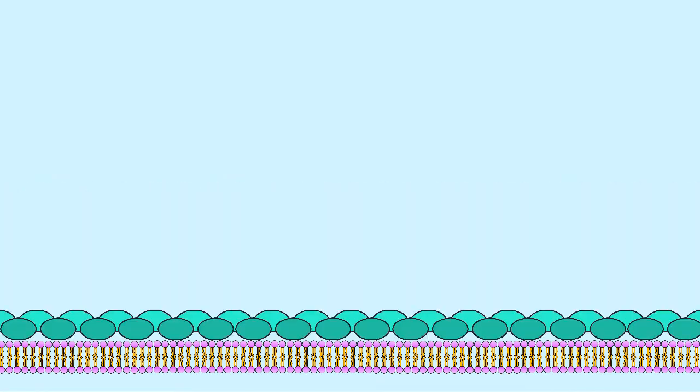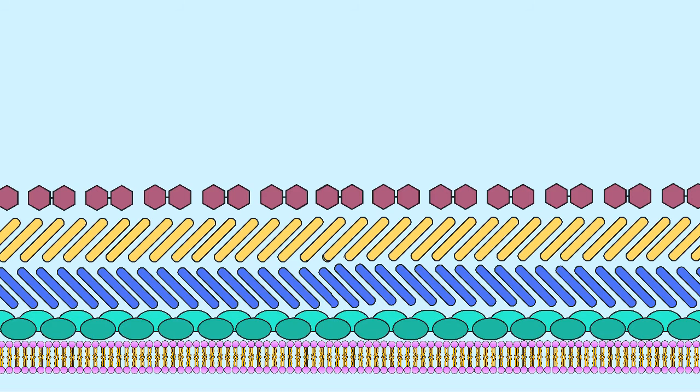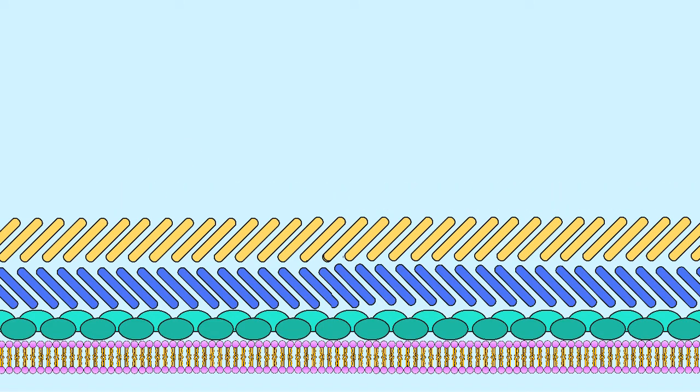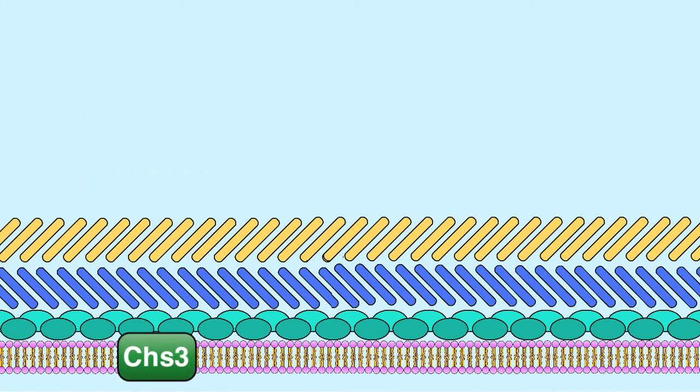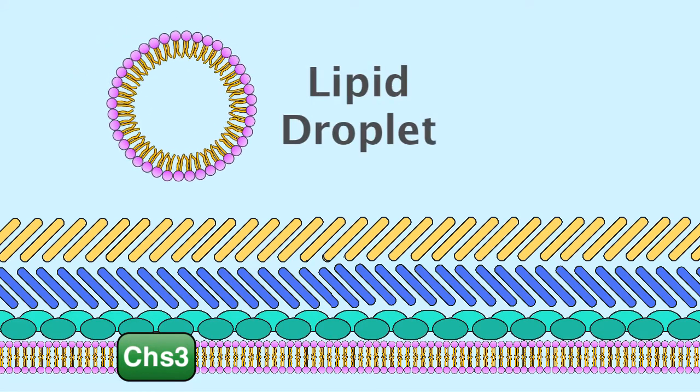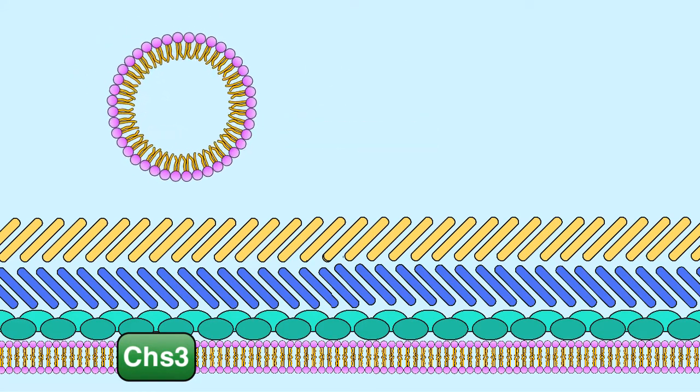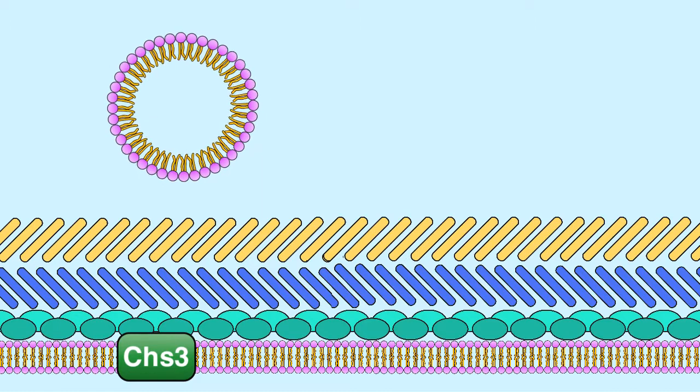The layers of these resistant walls are built up one by one and involve many different factors. To properly build the third layer, made of chitosan, yeast require the chitin synthase known as CHS3. Also crucial to this process are lipid droplets, which carry a variety of lipids and proteins to the site of the expanding spore wall.